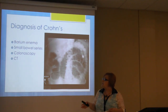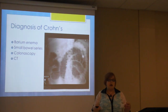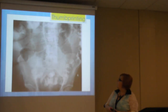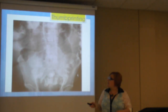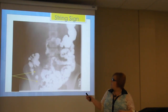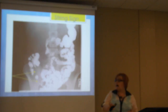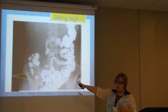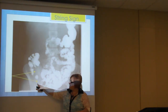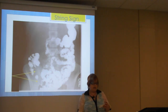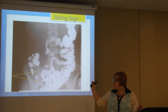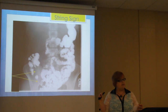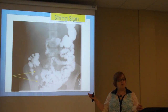On a small bowel series, you'll see a cobblestone appearance, string signs, skip lesions, and thumb printing as signs of Crohn's. Here you can see some thumb printing in this area — it kind of represents thumbs, which fits the name. String signs are visible where barium moves through very narrow areas creating a string-like pattern due to incomplete filling of the lumen, caused by the irritability and spasms in the bowel. String signs are typically seen around the terminal ileum.